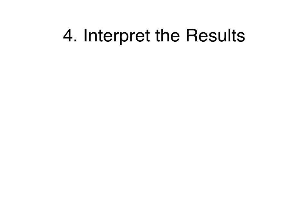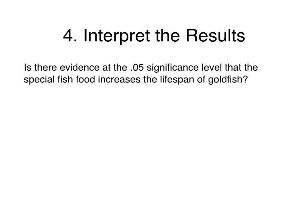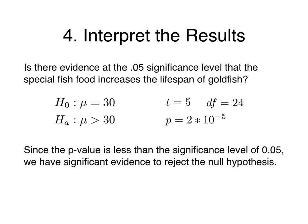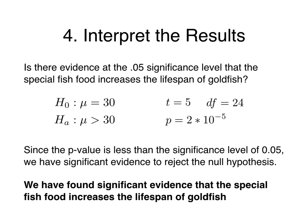Now that we have finished all calculations, let's interpret our results. We tested a null hypothesis of mu equals 30 against an alternative of mu greater than 30, and found a t-statistic of 5 with 24 degrees of freedom, leading to a p-value of 2 times 10 to the negative fifth. Since the p-value is less than the significance level of 0.05, we have significant evidence to reject the null hypothesis. In context, we have found significant evidence that the special fish food increases the lifespan of goldfish, and this concludes our investigation.